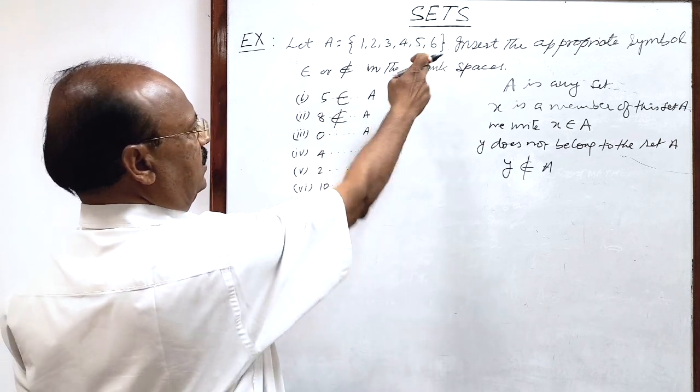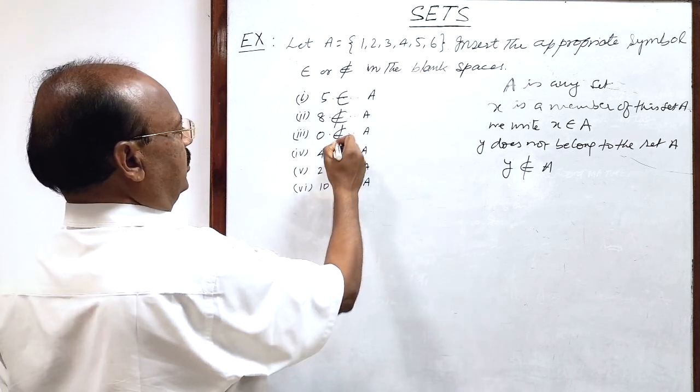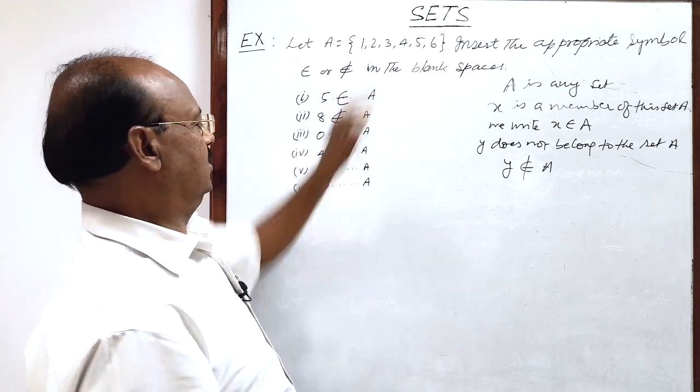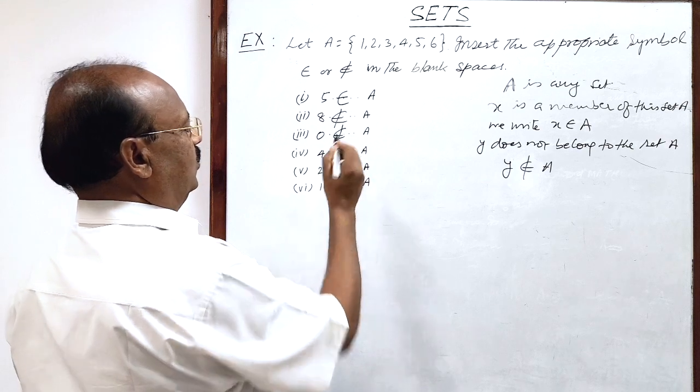0. 0 is not in this set. So 0 does not belong to set A. Fourth, 4 belongs to this set. So write here 4 belongs to set A.